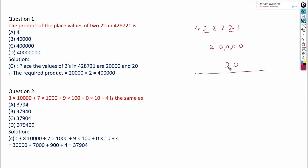Now we multiply these two place values of 2: 20,000 multiplied by 20. Taking the 4 zeros and 2 twos together, our answer is 4 lakh. Now let us see the second question.